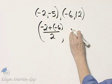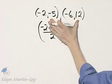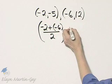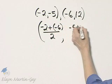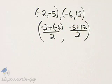Then for the y coordinate of the midpoint, it's the average of these y coordinates. How do we find the average of two numbers? We add them, negative 5 plus 12, and we divide by 2.